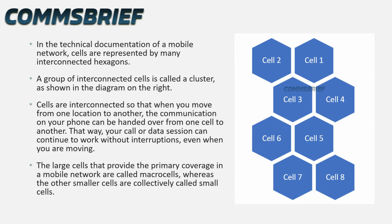In the technical documentation of a mobile network, cells are represented by many interconnected hexagons. A group of interconnected cells is called a cluster, as shown in the diagram on the right. Cells are interconnected so that when you move from one location to another, the communication on your phone can be handed over from one cell to another, allowing your call or data session to continue without interruptions.